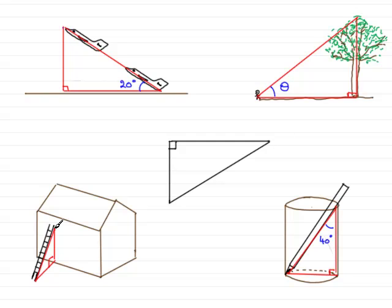Or maybe with the ladder leaning against the wall, we want to work out some sides of the triangle. We might know this angle here — the angle that the ladder makes with the wall — and let's just suppose it's 10 degrees. But in every triangle we have, we've always got an angle that we're going to use, other than 90 degrees, or an angle that we're going to want to find — in this case, theta.